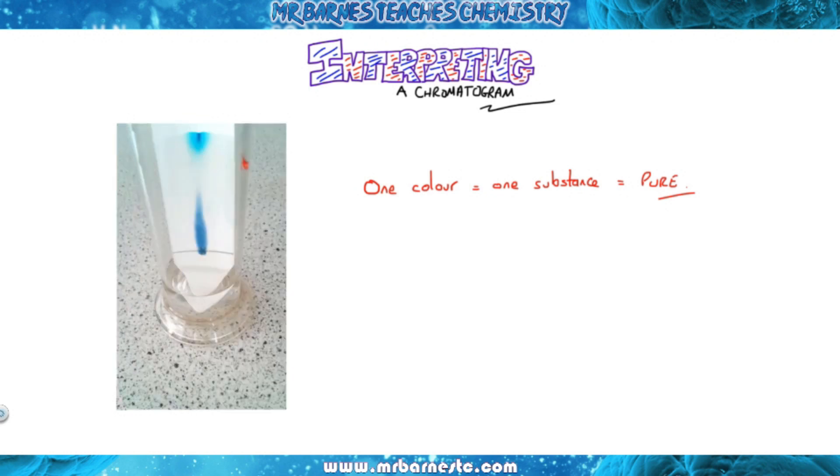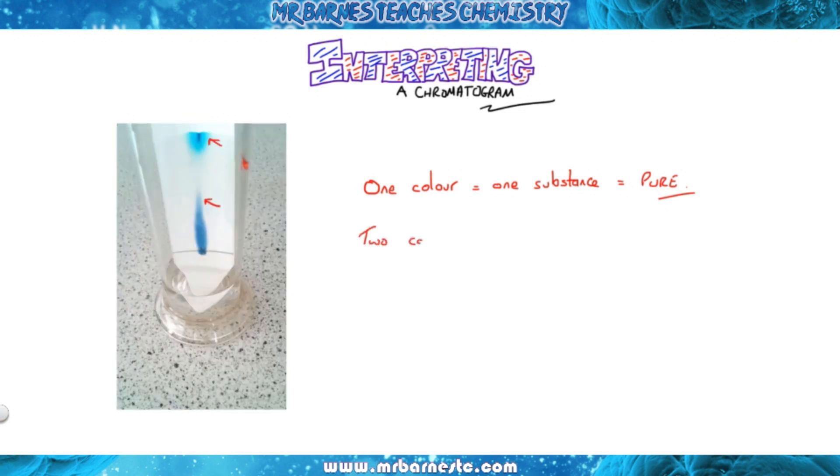However if I change to this one here you can see I've got two colours. If I've got two colours it's impure, it's a mixture of two different dyes. So that's the first thing that you can find out.